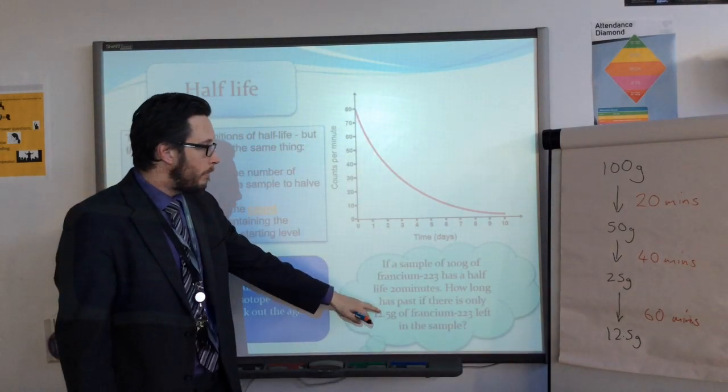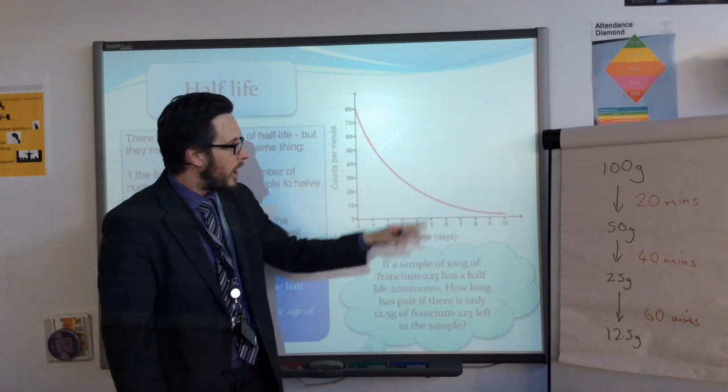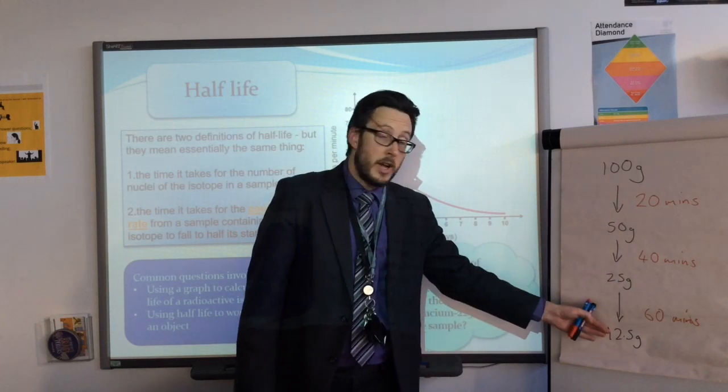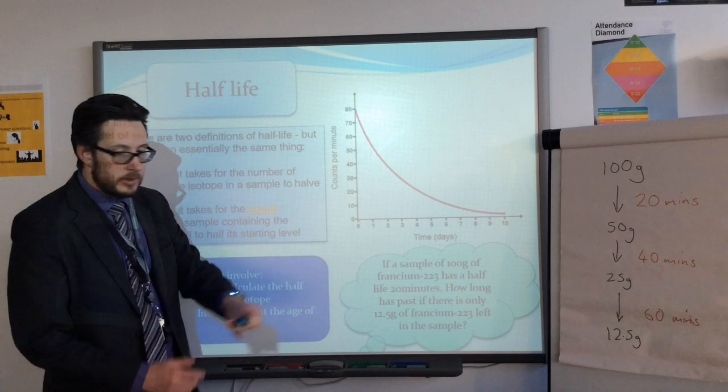And half of 25 means a third half-life has passed to get to 12.5 grams. And that means 60 minutes has passed. I'm adding on a half-life each time for us to drop down to 12.5 grams. So the answer, that sample, is 60 minutes old. Because the amount of francium has dropped from 100, it's gone through three half-lives. Three times 20 gives us 60 minutes for using numbers.